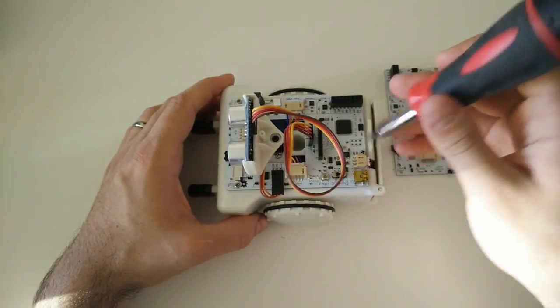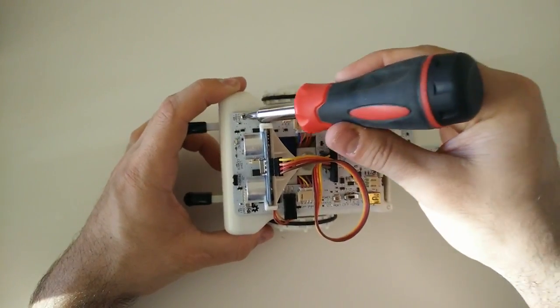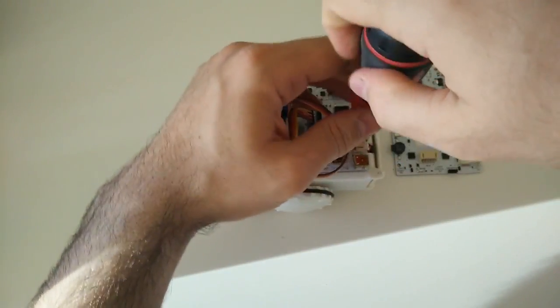First we're going to take a screwdriver and we're going to remove three screws. One here, here, and down here. Make sure you're putting these in a place where they're not going to get lost.